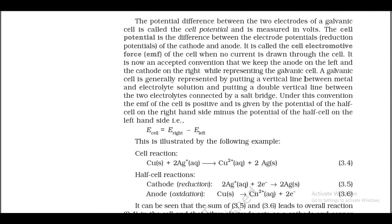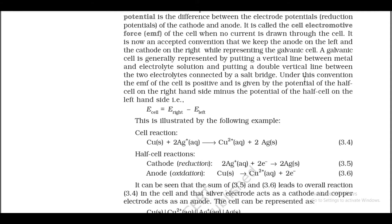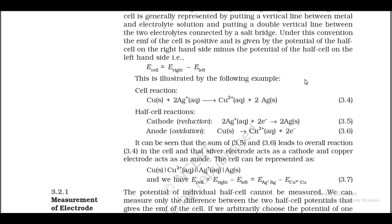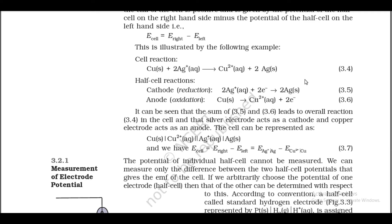For example, for the cell reaction Cu + 2Ag⁺ → Cu²⁺ + 2Ag: the cathode reduction reaction is 2Ag⁺ + 2e⁻ → 2Ag, and the anode oxidation reaction is Cu → Cu²⁺ + 2e⁻. The cell is represented as Cu|Cu²⁺||Ag⁺|Ag, and E_cell = E_Ag⁺/Ag − E_Cu²⁺/Cu. The potential of individual half cells cannot be measured directly; only the difference between two half cell potentials, which gives the EMF, can be measured.